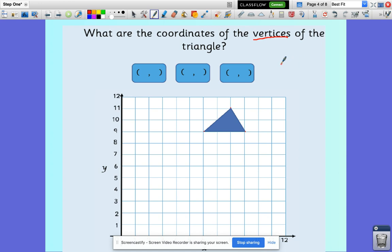The vertex, you might see this word, vertex is the singular. So one vertex and three vertices. And all it means is the corner. So what are the coordinates of the vertices of the triangle?